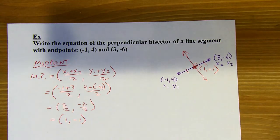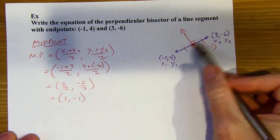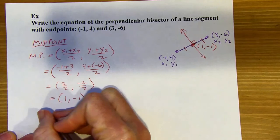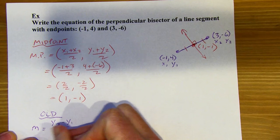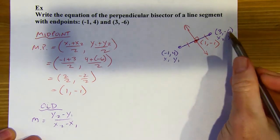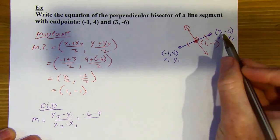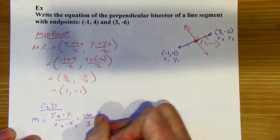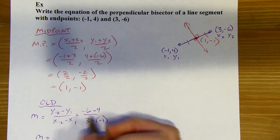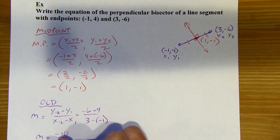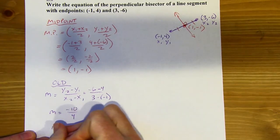Now I need to find the slope of the red perpendicular bisector line. I'll first find the slope of the original segment — the purple piece. Slope equals change in y over change in x. Negative 6 minus 4 in the numerator gives negative 10, and 3 minus negative 1 in the denominator gives 4. That simplifies to negative 5 halves.